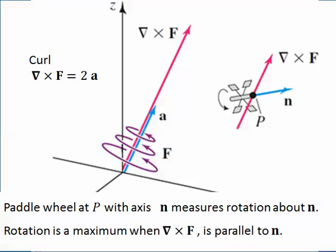Well, rotation is a maximum when theta is equal to zero. Meaning that rotation is a maximum when the curl of f and my paddle wheel are parallel.